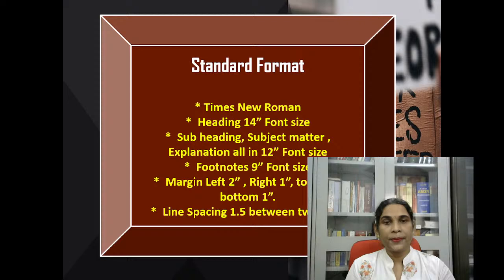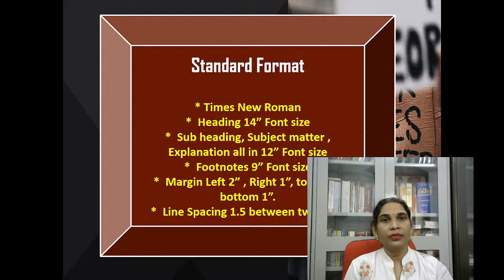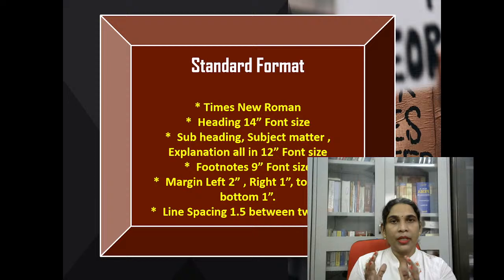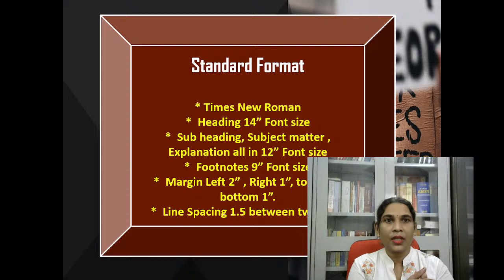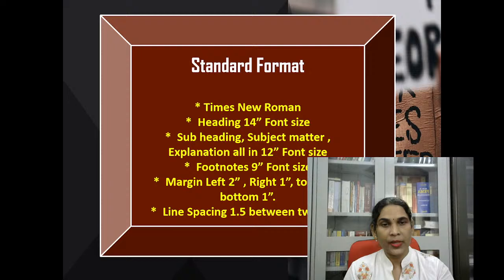Line spacing is 1.5, and one important thing: if there are two paragraphs, you should use double spacing — 2.0 spacing is required. For example, if there is an introduction and the next section is historical perspective, so the topic has changed, and it requires 2-line spacing because it shows your paragraph has changed and the topic is also going to change.